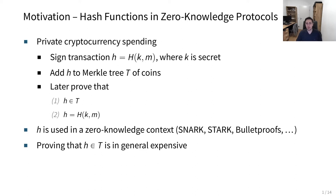For example, consider a private cryptocurrency spending scenario. Here we want to sign some transaction h, which is the hash value of some secret k and the metadata m. After that, we want to add h to the Merkle tree which contains the coins. At some later point in the future, we want to prove that h is actually an element of the tree. But we also want to show that we actually know the secret k such that the hash of k and this metadata equals to h.